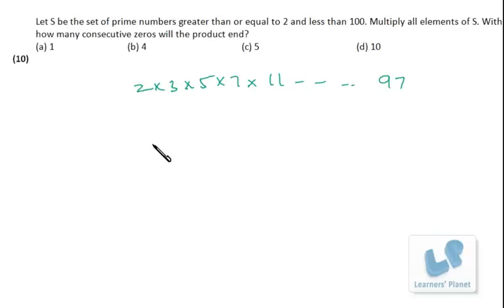Now, how do we get a 0? We get a 0 with 2 and 5 combinations. If we have a single 2 and 5 combination, we'll get a single 0. If we have two 2 and 5 combinations, we will get 2 zeros. So if we multiply this sequence, how many 2 and 5 combinations are we getting? It's one 2 and 5 combination.